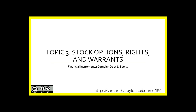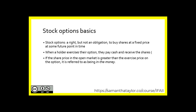Topic three: stock options, rights, and warrants. Stock options are a type of financial instrument that give the holder a right, but not an obligation, to buy shares at a fixed price at some future point in time. When a holder exercises their option, they pay cash and receive the shares — this is known as exercising the option, and the price paid is the exercise price. If the share price in the open market is greater than the exercise price, it is referred to as being in the money. If the share price is below the exercise price, it is out of the money.